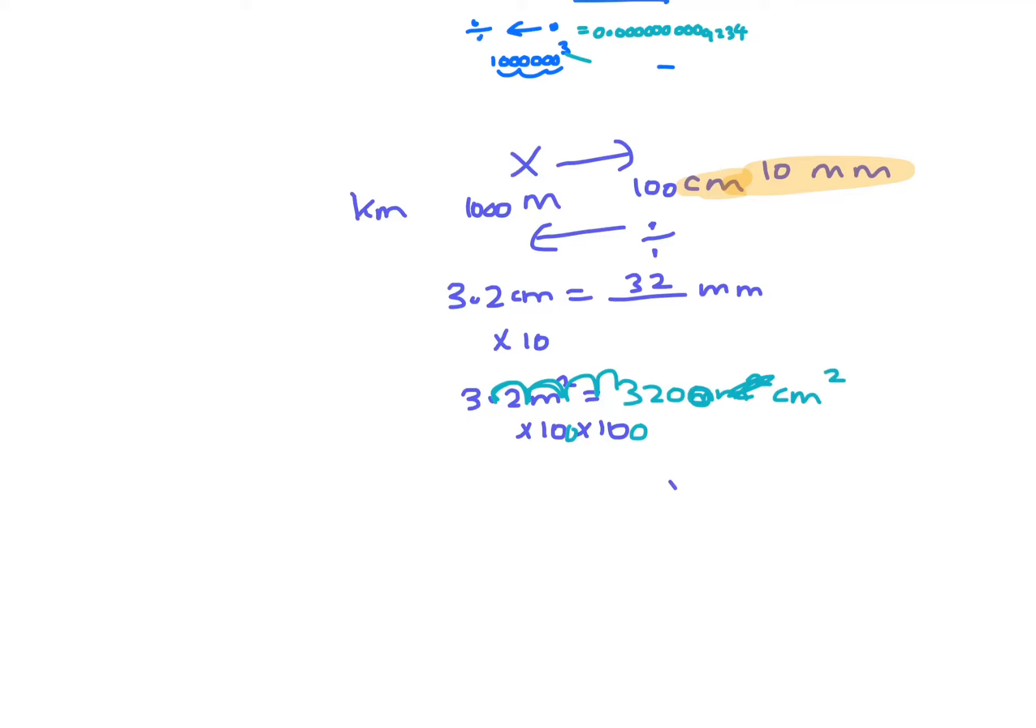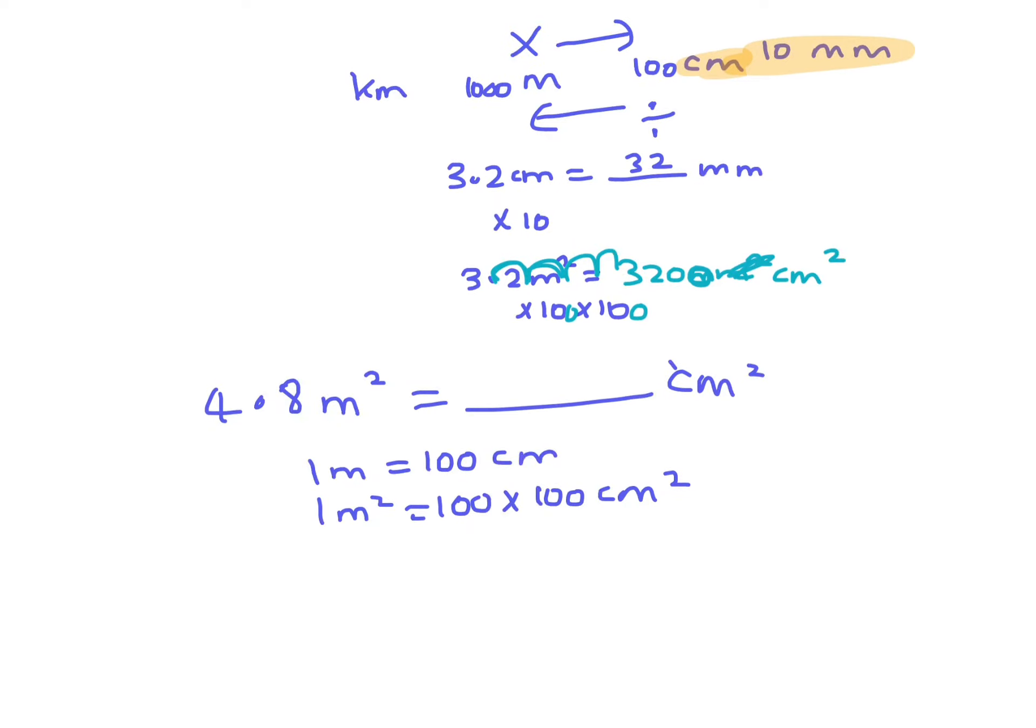I didn't do that one real well. Let's just have another go. 4.8 meters squared - I'll just do a square unit one again. Let's make it centimeters squared. So 1 meter is 100 centimeters, so 1 meter squared is 100 by 100 centimeters squared. Okay, so you move four decimal places. So it would be 48,000 centimeters squared.